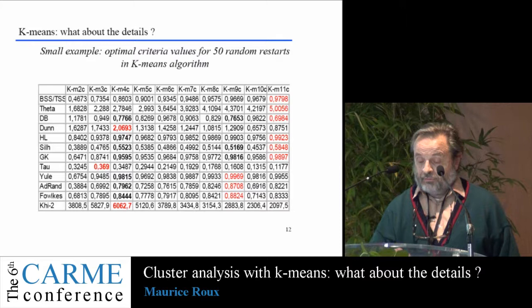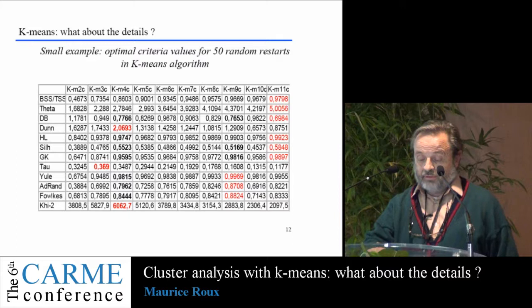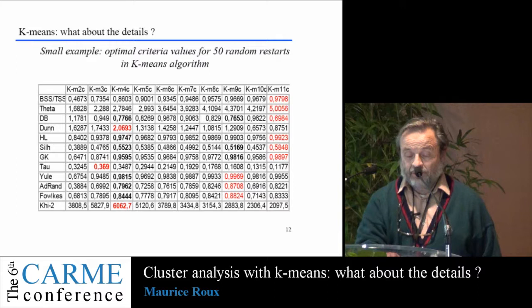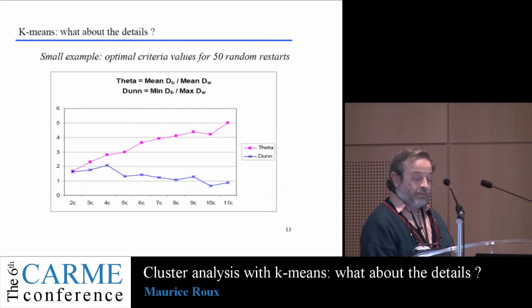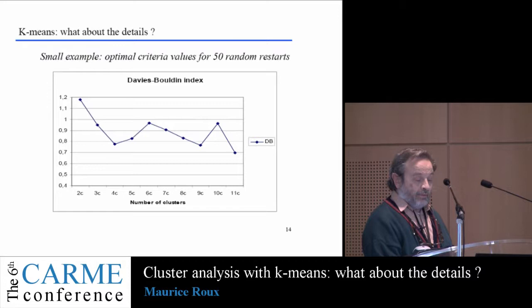The Davies-Bouldin index is also always decreasing, but it has some peaks — one for four clusters and another for nine clusters. There is a sort of agreement between the remaining indexes about four clusters, except for the two coefficient, which votes for a three-cluster solution. Theta is always increasing or almost increasing, while the Dunn index has several peaks.